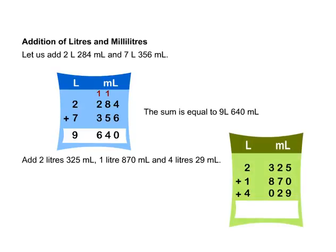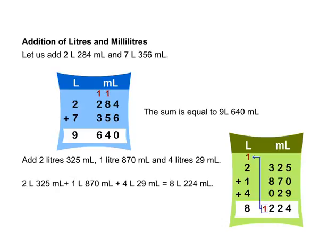It's simple. Arrange the numbers in columns. Add 325 ml, 870 ml, and 29 ml. Adding 2 liters 325 milliliters, 1 liter 870 milliliters, and 4 liters 29 milliliters gives a result of 8 liters 224 milliliters.